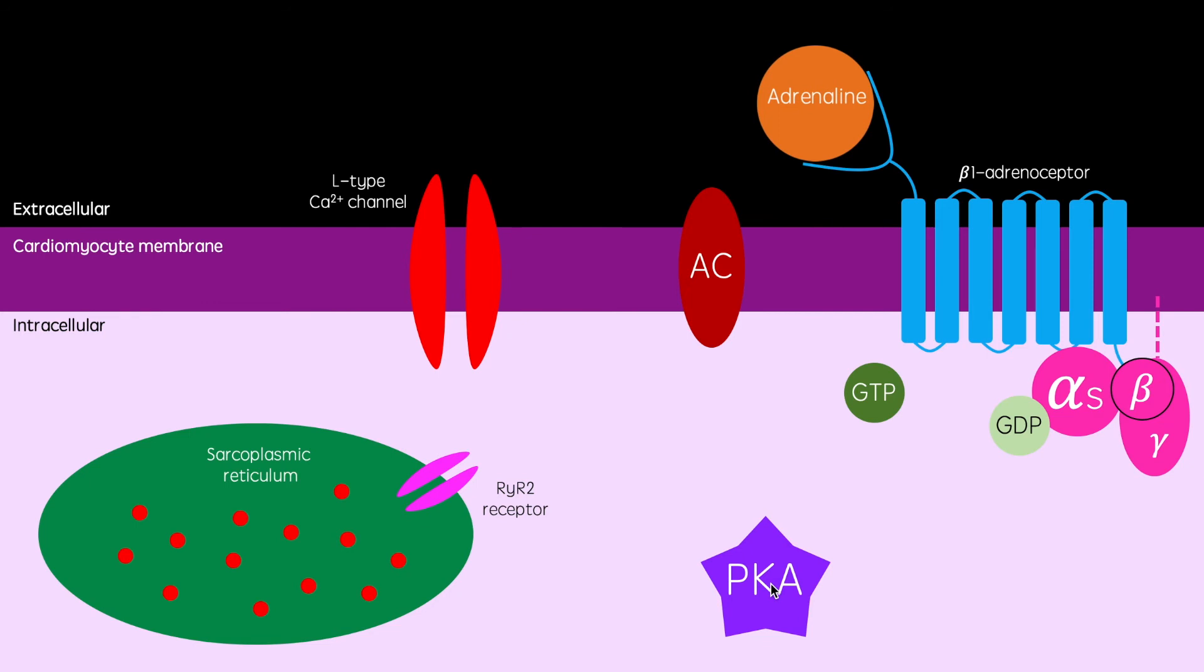This acts on beta-1 adrenoceptors on cardiomyocytes. Beta-1 adrenoceptors are Gs coupled proteins, meaning they activate adenylyl cyclase. There will be more on G protein coupled receptors in my upcoming video on these, which I'll provide the link for below once it's been uploaded.